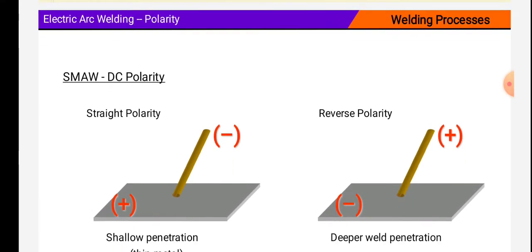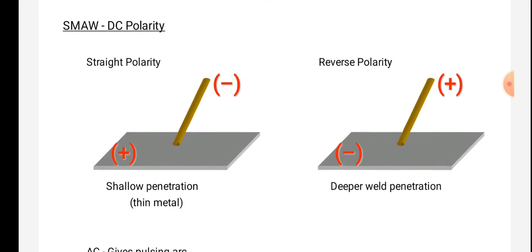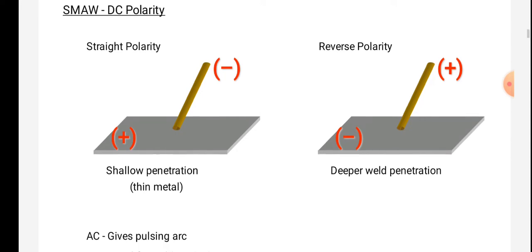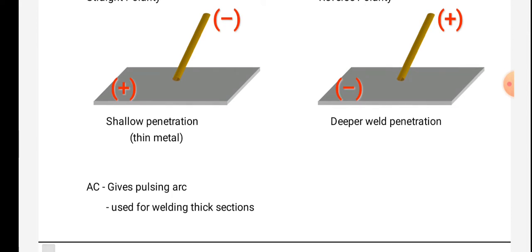Electric arc welding polarity. SMAW DC polarity: straight polarity, reverse polarity. Shallow penetration for thin metal, deeper weld penetration is given by the figure. AC gives pulsing arc, arc used for welding thick sections.